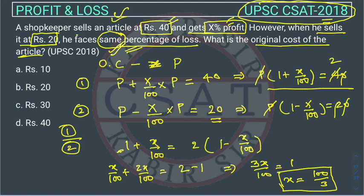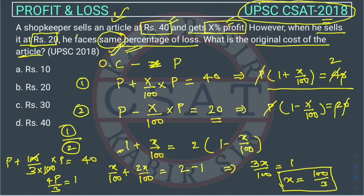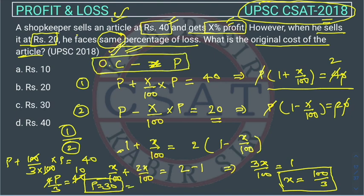Now we find the original cost price p. Substituting x = 100/3 into equation 1: p + (100/3)/100 × p = 40, which simplifies to p × (1 + 1/3) = 40, giving 4p/3 = 40, so p = 30. The original cost of the article is rupees 30, which is option 3.